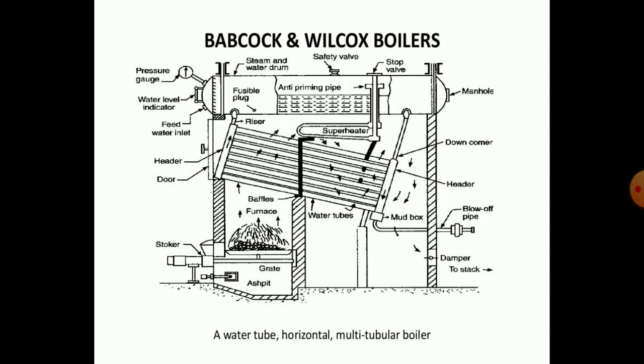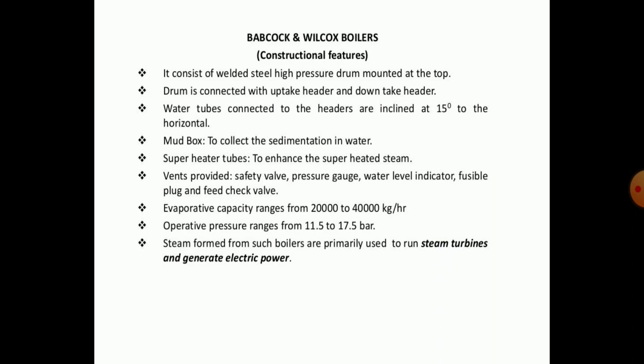Babcock and Wilcox boilers fall into the category of water tube boilers. In its construction, it consists of a welded steel high-pressure drum mounted at the top, connected with an uptake header and a downtake header. Water tubes connected to the headers are inclined at 15 degrees to horizontal, and a mud box collects sedimentation from the water. Superheater tubes are used to enhance superheated steam, while vents are provided for safety valves, pressure gauge, and water level indicator. Its evaporative capacity ranges from 2000 to 4000 kg per hour, while operating pressure ranges from 11.5 to 17.5 bar.